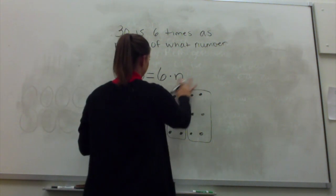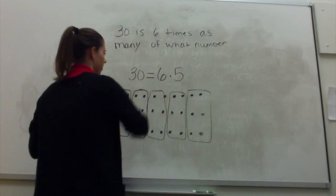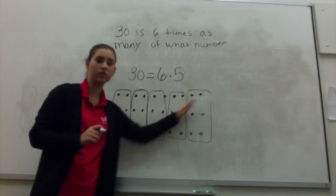So if we plug in 5 for our n, does 6 times 5 equal 30? Yes, it does. And we can also check and count to make sure.